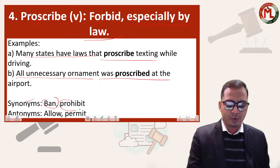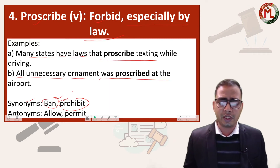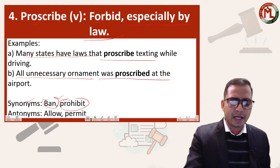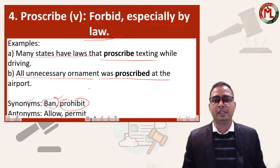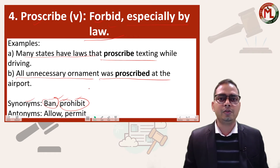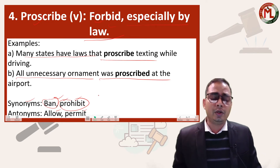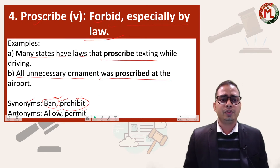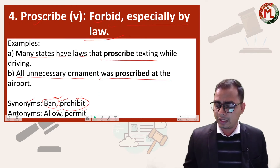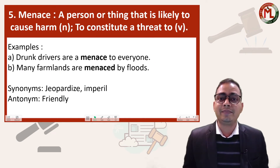The synonyms of 'proscribe' are 'ban' and 'prohibit' — both are legal and official words. So proscribe, forbid, ban, and prohibit are all synonymous. The antonyms are 'allow' and 'permit.' So that was the fourth word.